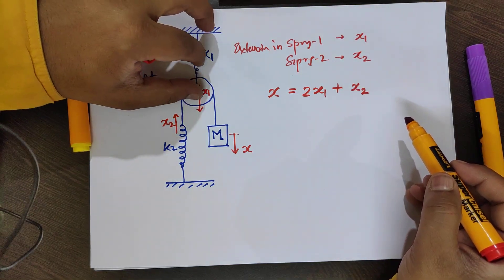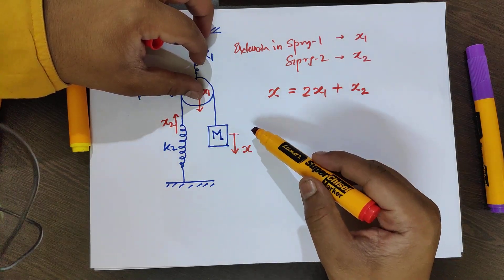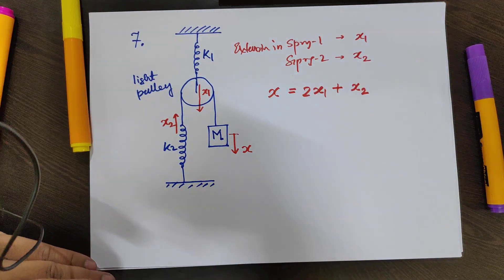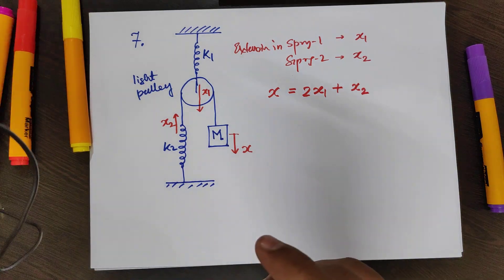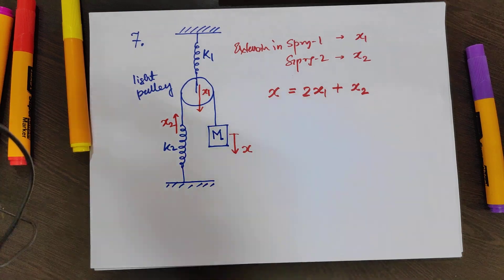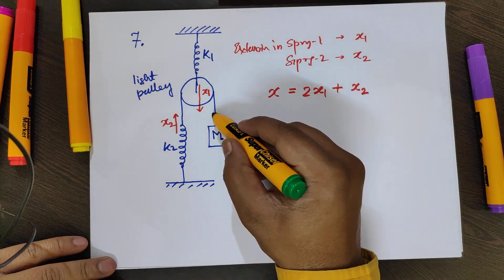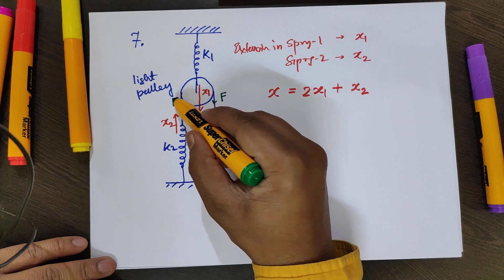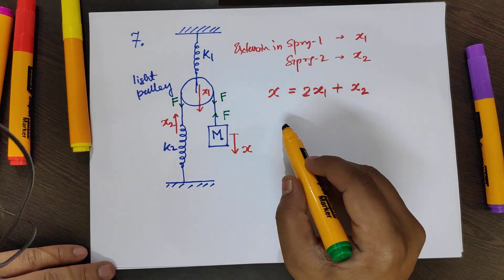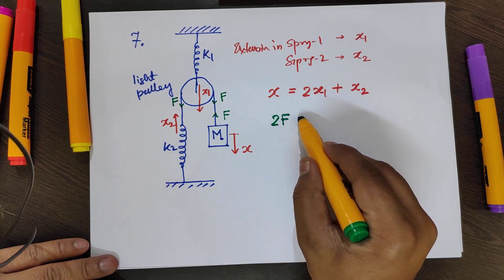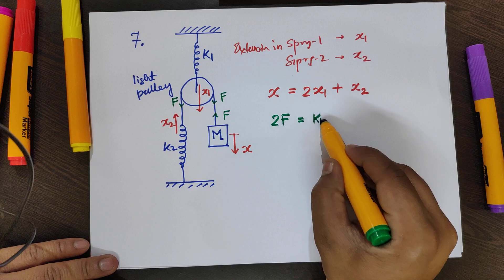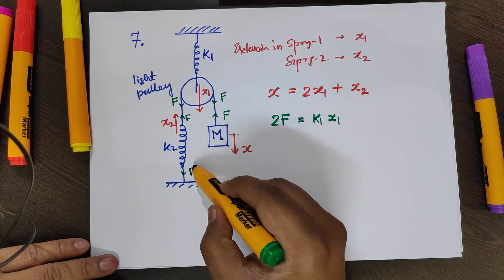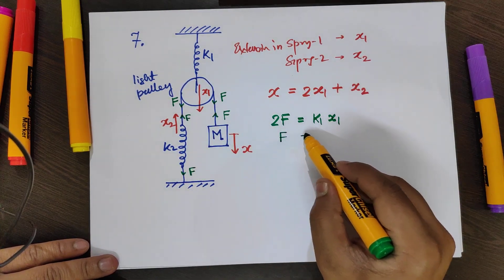If there is no extension in spring 1, the extension in spring 2 is the same as the distance moved by the block downward. Using superposition to calculate the excess forces, suppose the extra force is f throughout. Since the forces on the pulley are balanced, we write 2f = k1·x1, and since the same force acts on spring 2, f = k2·x2.